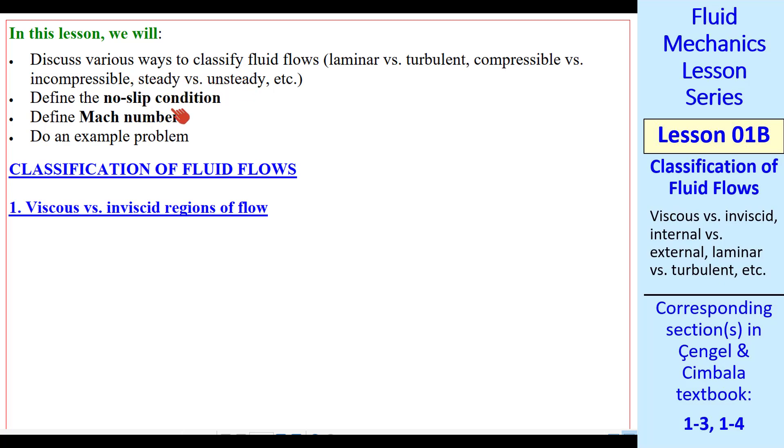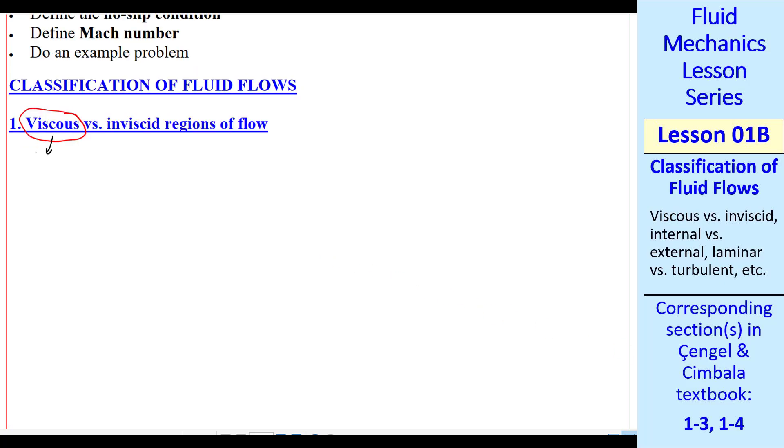In this lesson, we'll discuss various ways to classify fluid flows. We'll define the no-slip condition, define Mach number, and do an example problem. First, let's talk about viscous versus inviscid regions of flow. For a fluid, the term viscous refers to when there is friction between fluid particles.